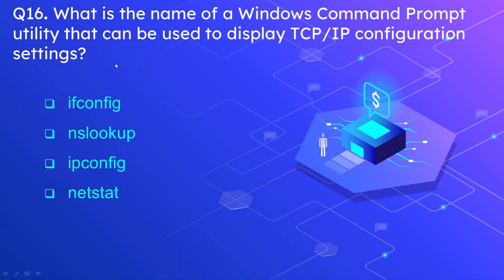Question number sixteen: what is the name of a Windows command prompt utility that can be used to display TCP/IP configuration settings? The options are ifconfig, nslookup, ipconfig, and netstat. The correct answer is ipconfig. The ifconfig command does the same thing, but it is used in Linux or Unix operating systems, while in Windows we use ipconfig.